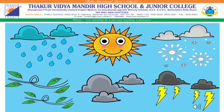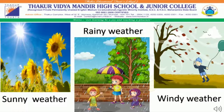The weather can be hot, cold, dry or wet. There are five types of weather. They are sunny, cloudy, rainy, windy, and snowfall.